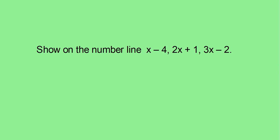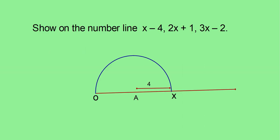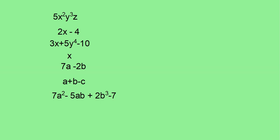Can you do this question? Show on the number line x minus 4, 2x plus 1, 3x minus 2. Here, x minus 4, you can take x with any measurement and give 4 units backwards. That represents x minus 4. The point A represents x minus 4. Similarly, do 2x plus 1, 3x minus 2.